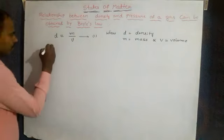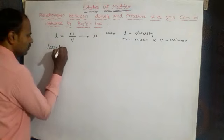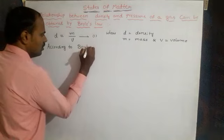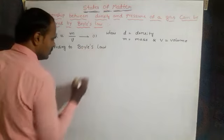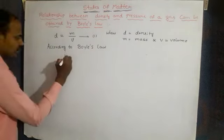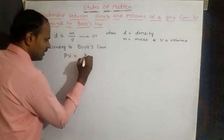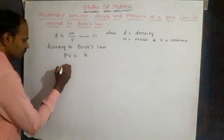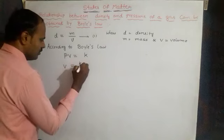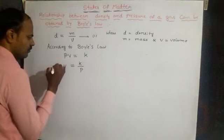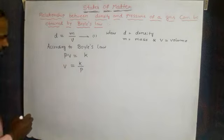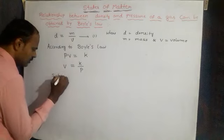According to Boyle's law, the mathematical form is PV = constant, that is PV = k. From this, v is equal to k divided by p, so v = k/p.